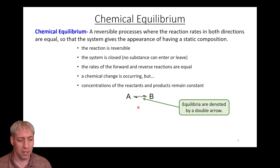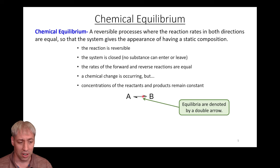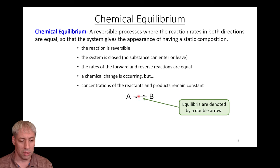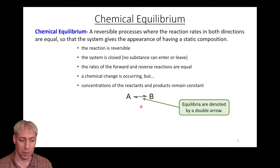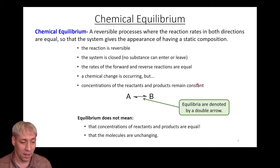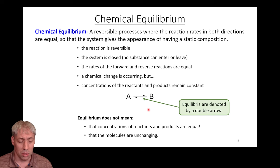Chemically, we depict this with a double-sided arrow — a half arrow on top and half arrow on bottom — showing that A to B and B to A reactions happen simultaneously. It's very important to note what equilibrium is not: equilibrium does not mean the concentration of reactants and products are equal. In fact, that's rarely the case.